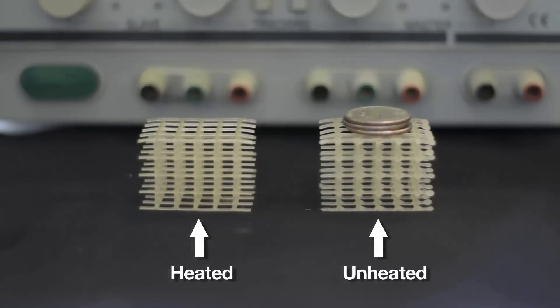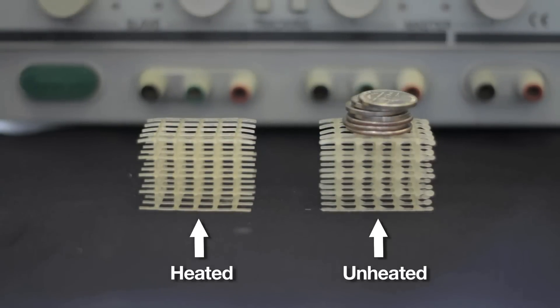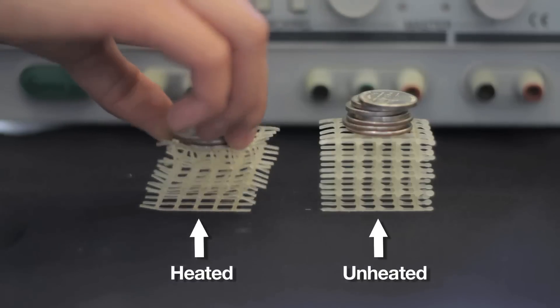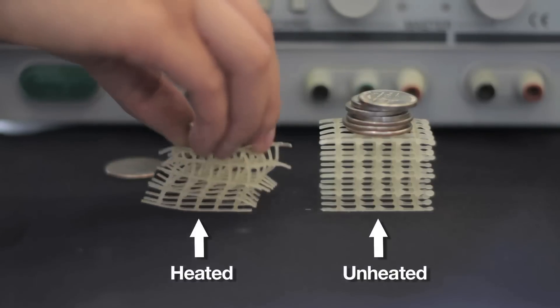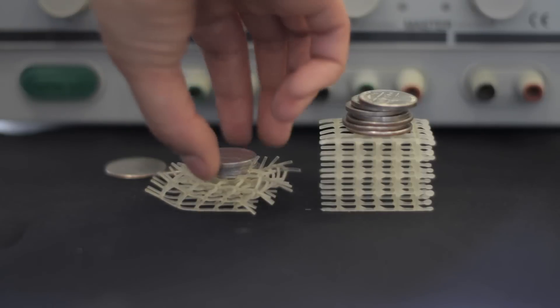So what we were looking for was a material that could shift between soft and hard states. So what you're looking at here is a soft scaffold of foam that's been coated in wax. And when the wax is heated, you get the soft structure. And when the wax re-solidifies, it regains its rigidity.